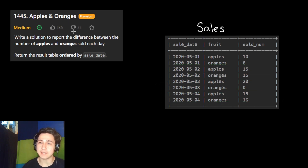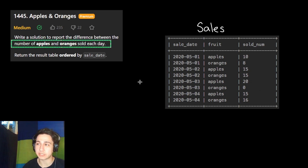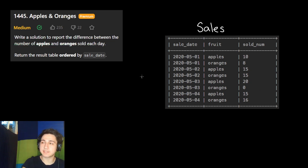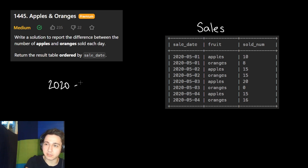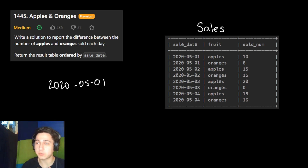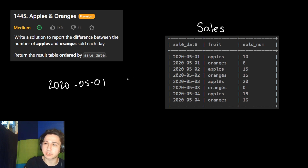What they want us to find is the difference between the number of apples and oranges sold each day. Let's go through an example. Our first day, May 1st, 2020, we sold 10 apples and 8 oranges. The difference between those quantities is two — 10 minus 8 is two, so we're going to return two for this day.